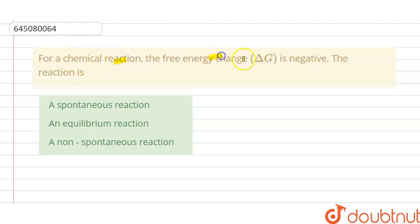Hello students, today our question is: for a chemical reaction the free energy change, that is delta G, is negative. The reaction is spontaneous reaction, equilibrium reaction, or a non-spontaneous reaction.